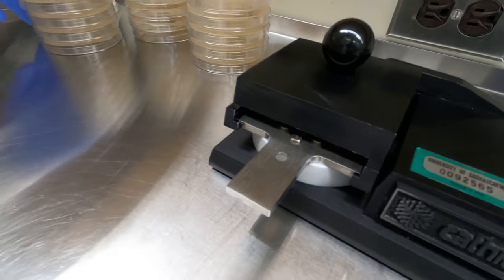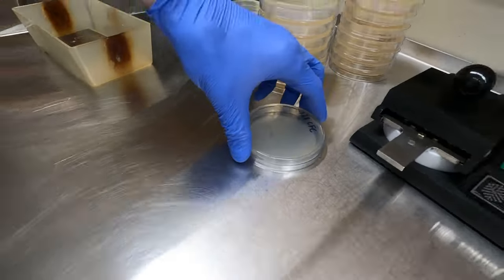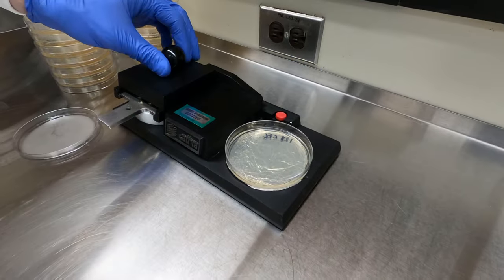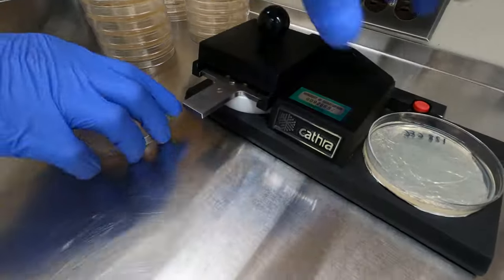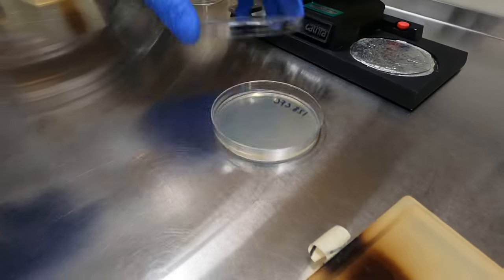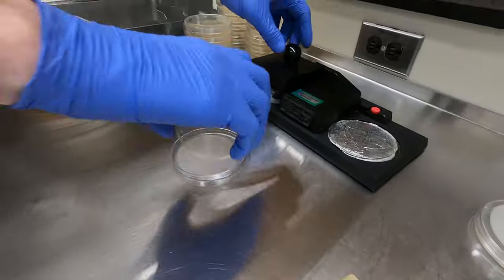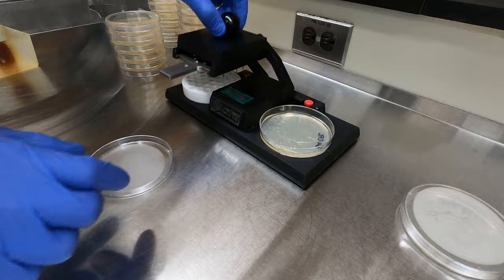Using the arm of the replicator, we then dip our pins into the well plate before placing a petri dish on the other side. We then move our pin plate over to the agar dish, spotting our inoculum onto the Mueller-Hinton surface.